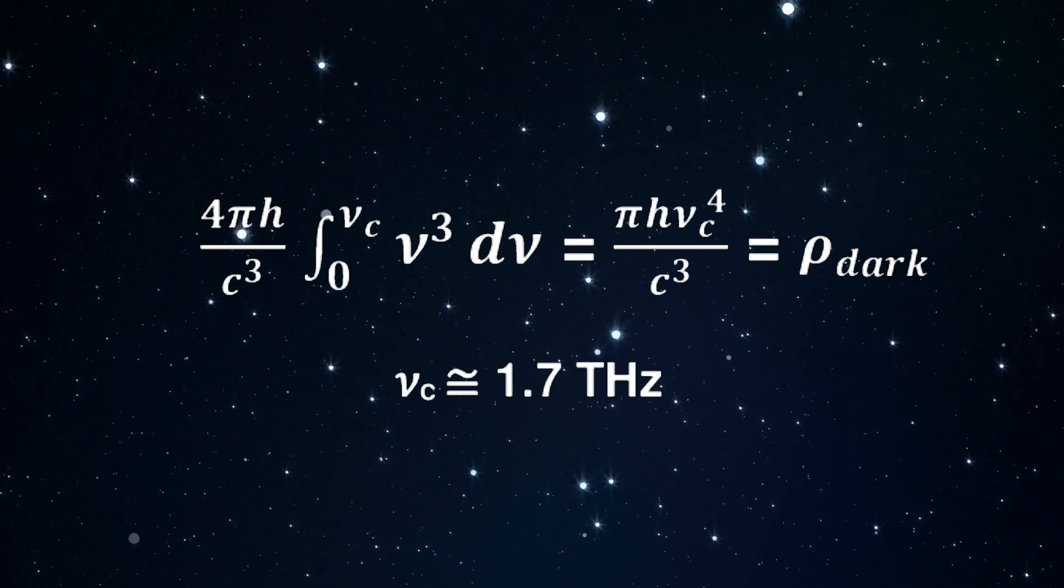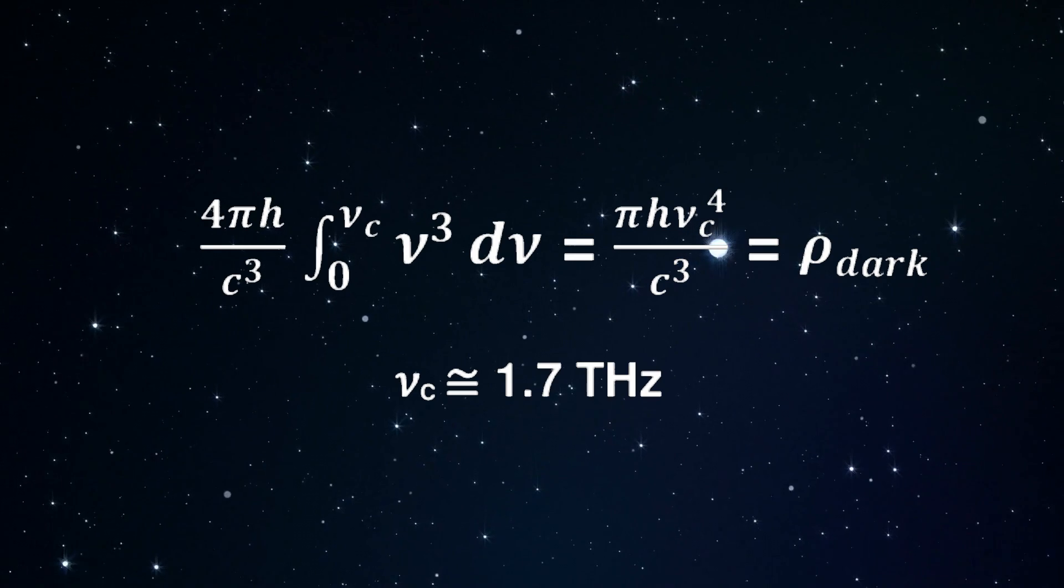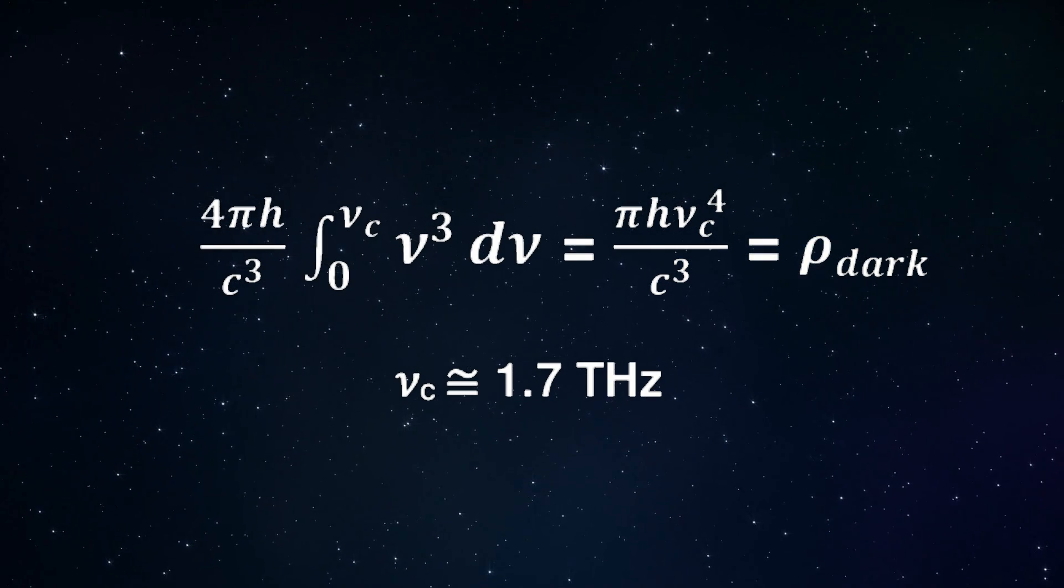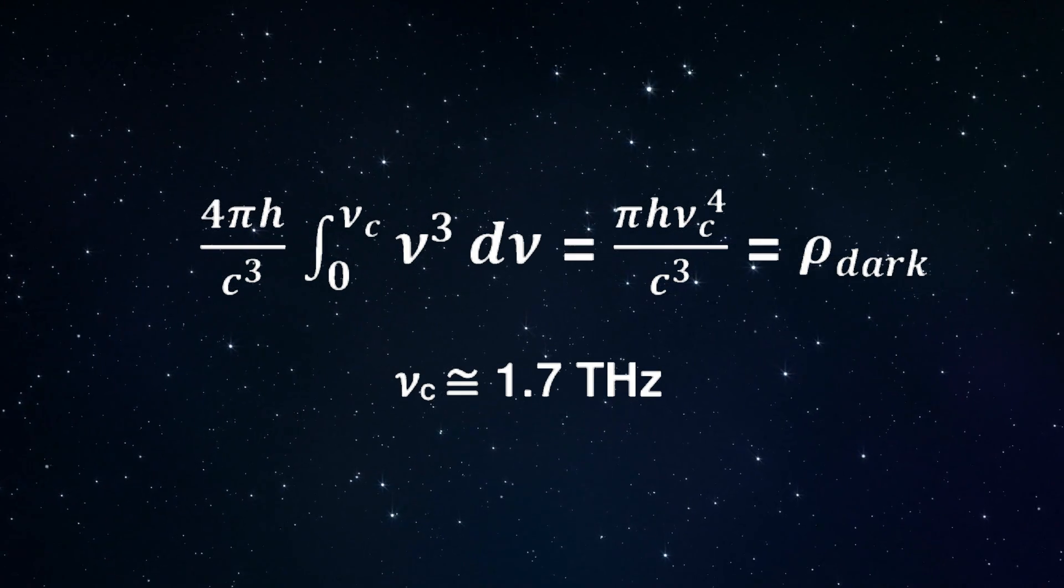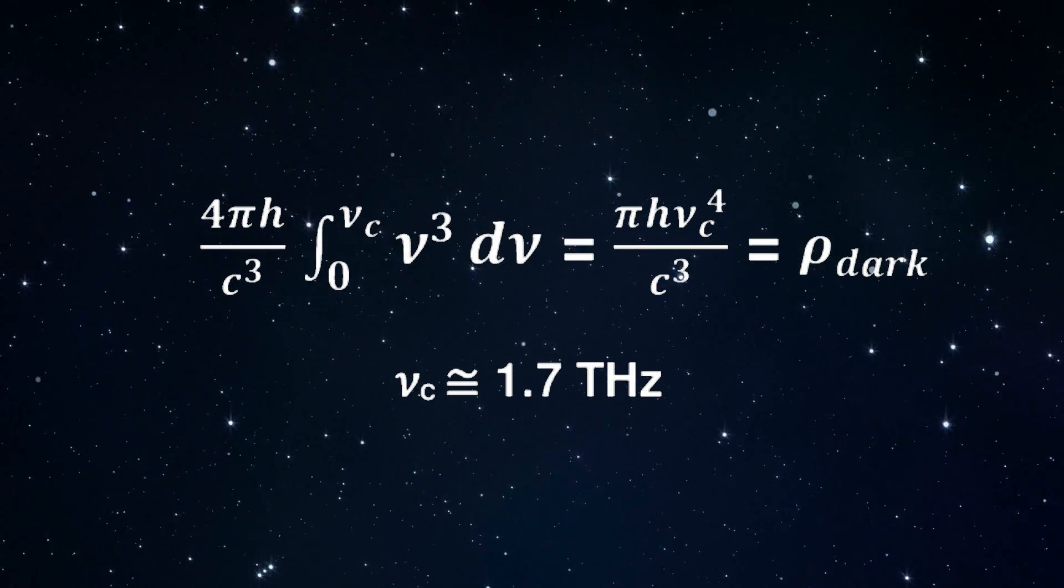For the prominent pentagonal dodecahedral water nanocluster, the cutoff vibrational frequency is approximately 1.7 terahertz. This formula produces the correct, relatively small dark energy density, namely 3.6 GeV per cubic meter.